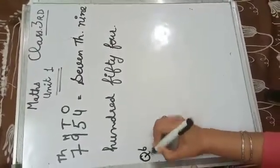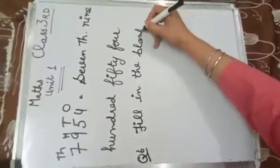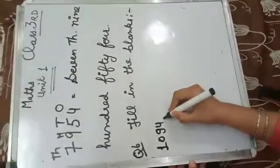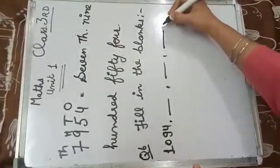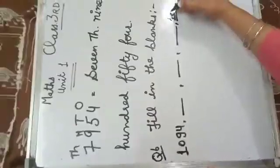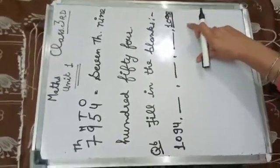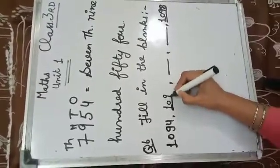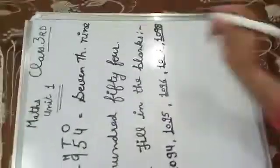I hope you understand. Now question number 6: fill in the blanks. For example, here is written one thousand ninety-four, with fill-ups up to one thousand ninety-eight. You fill: one thousand ninety-four, one thousand ninety-five, one thousand ninety-six, one thousand ninety-seven.